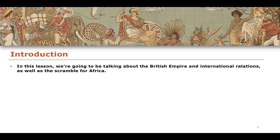We'll be talking about a few different things in this lesson. We'll be talking about how the British Empire related to a variety of other empires - the international relations aspects of the British Empire - and the concept of the Scramble for Africa, this being a sort of imperial competition that takes place among a variety of imperial states and colonial projects in and around this period of time.